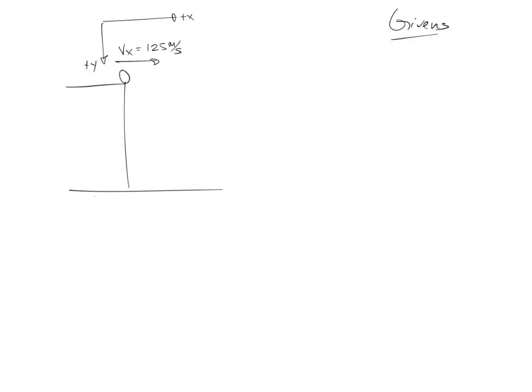Okay, so v naught x, which is the same as v in the x direction, looks like it's 125 meters a second, right? So this is the same because you don't have any opposing force. There's no net force in the horizontal direction, right? This is a number six, right?